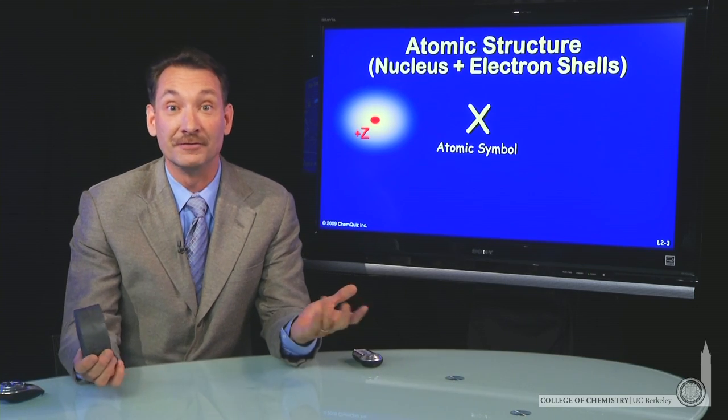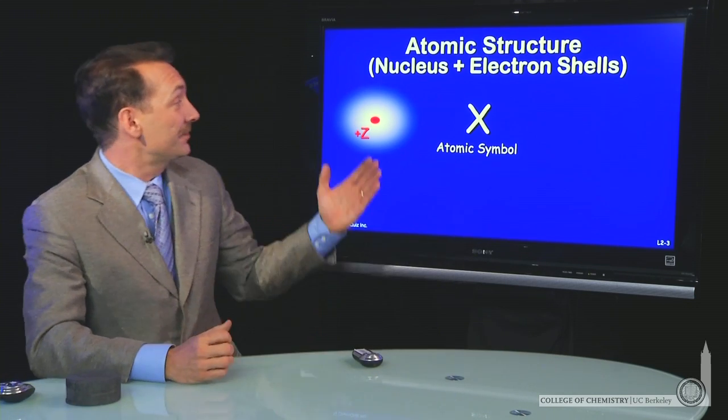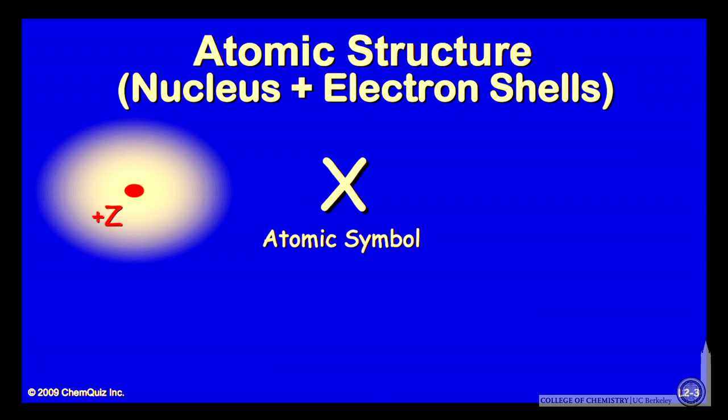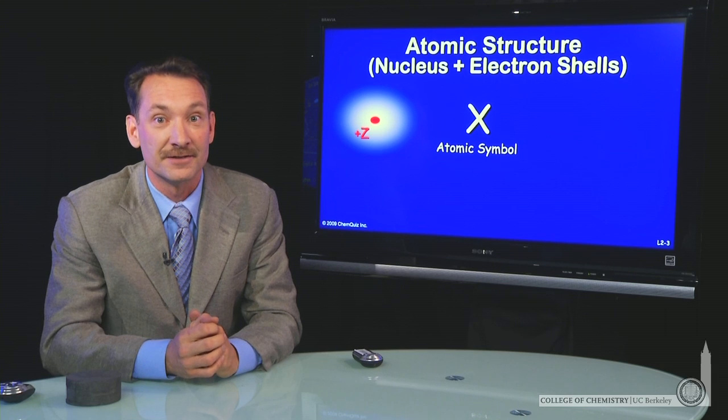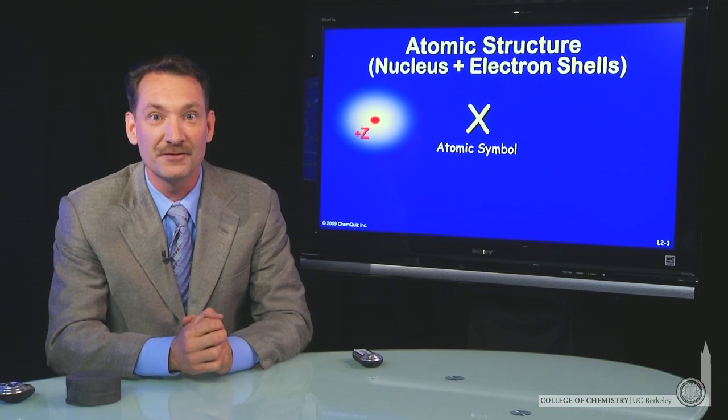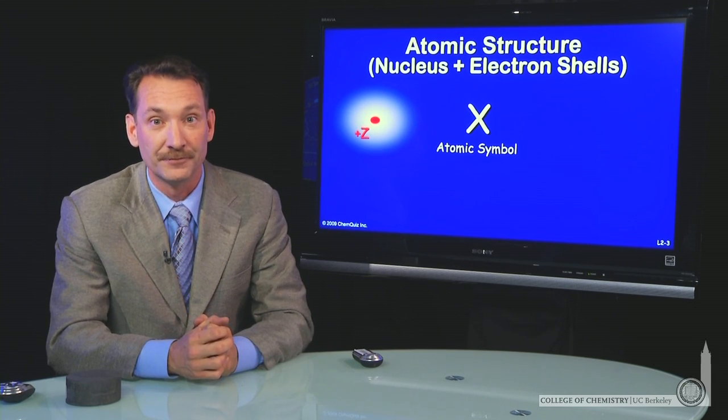What's an atom composed of? Well, atoms have a nucleus that's positively charged. It's positively charged because it contains protons. Protons contain a positive one electrical charge.